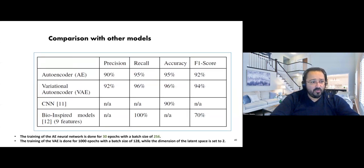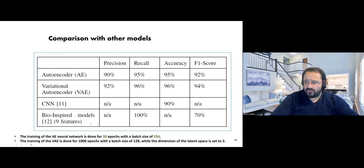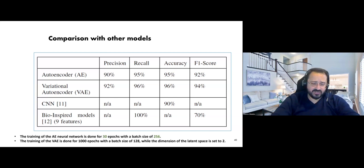Comparing the autoencoder with CNN and bio-inspired models — we had better results. These bio-inspired models, like ant colony and bee algorithms coming from nature, are very interesting for research. There are many proposals about these algorithms, but generally our results were very good compared to them.